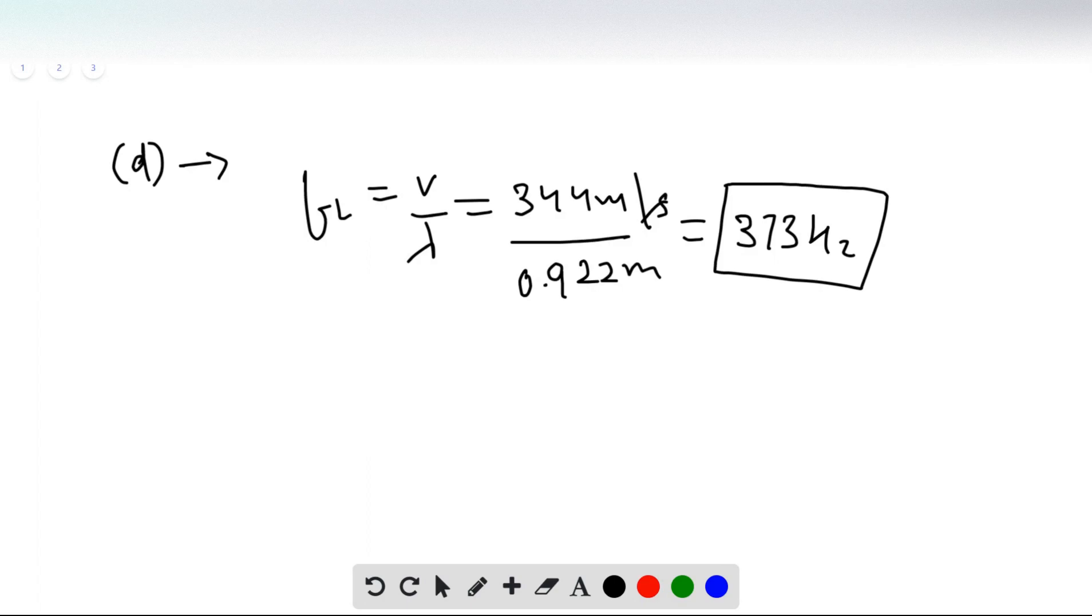In front of the source moving towards the listener, the wavelength decreases and the frequency increases. Behind the source moving away from the listener, the wavelength increases and therefore the frequency decreases. Whenever the wavelength increases, the frequency decreases if the velocity remains the same.